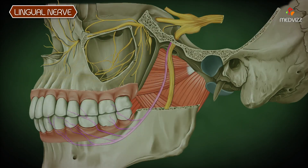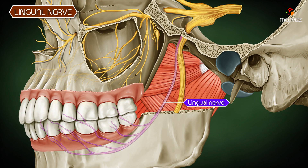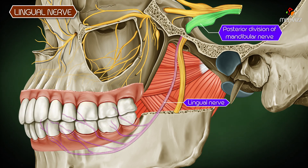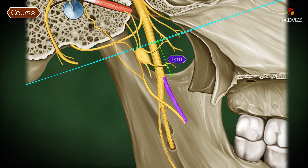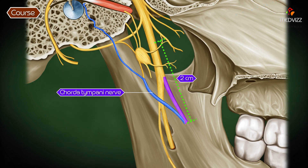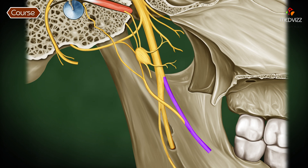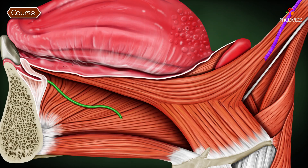The lingual nerve is one of two terminal branches of the posterior division of the mandibular nerve. Its course begins about one centimeter below the skull, and approximately two centimeters below the skull it is joined by the chorda tympani nerve at an acute angle.